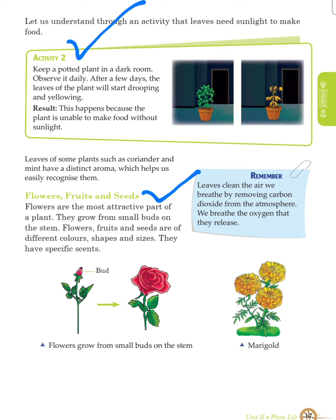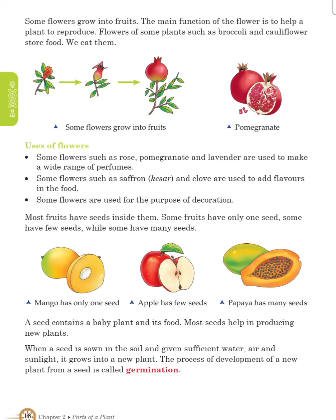Flowers, fruits and seeds: flowers are the most attractive part of a plant. They grow from small buds on the stem. Flowers, fruits and seeds are of different colors, shapes and sizes. They have specific scents. Some flowers grow into fruits. The main function of a flower is to help a plant to reproduce. Flowers of some plants such as broccoli and cauliflower store food; we eat them. Some flowers grow into fruits, as seen in pomegranate.